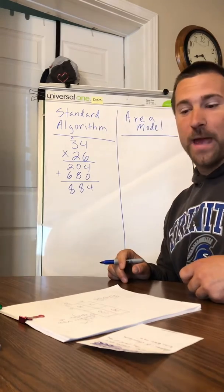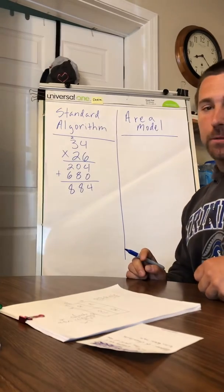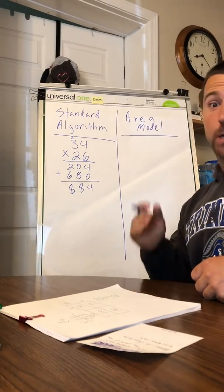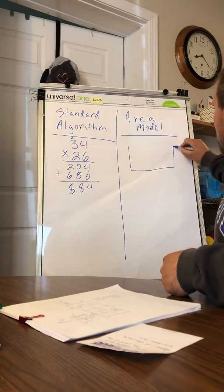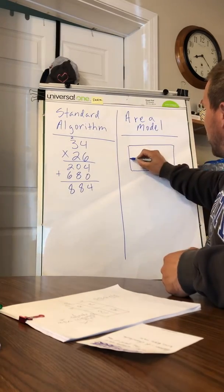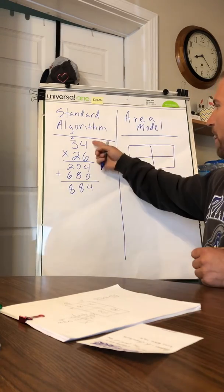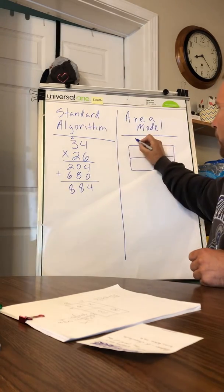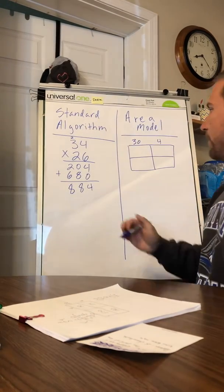Okay, now for my area model. Because this is a two-digit by two-digit number, my area model needs to be a two by two rectangle. So I'm going to draw my two by two rectangle just like this. I'm going to make it two units tall and two units wide. I'm going to put my 34 on the top: I'm going to put 30 over here, my tens, and my four over here. And then I'm going to put my 26 on the side: I've got 20 and six.